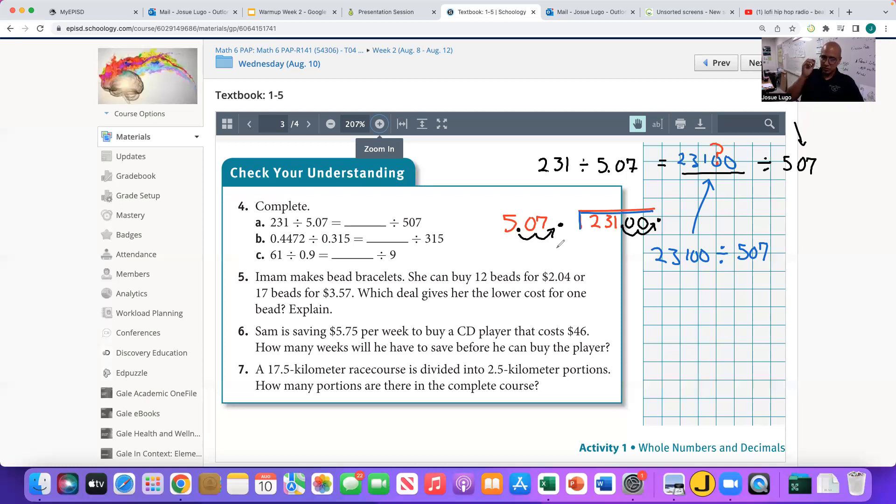And that will give you the same answer as 231 divided by 5.07. If you don't believe me, use a calculator, you will see that this is indeed the answer. So that's what you would type in into Schoology. Let's try a second one.